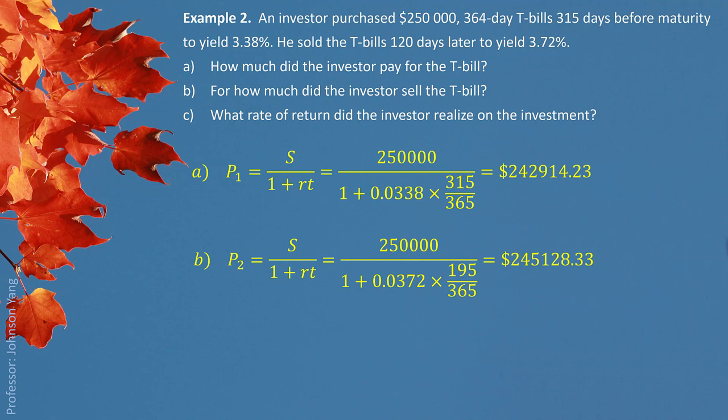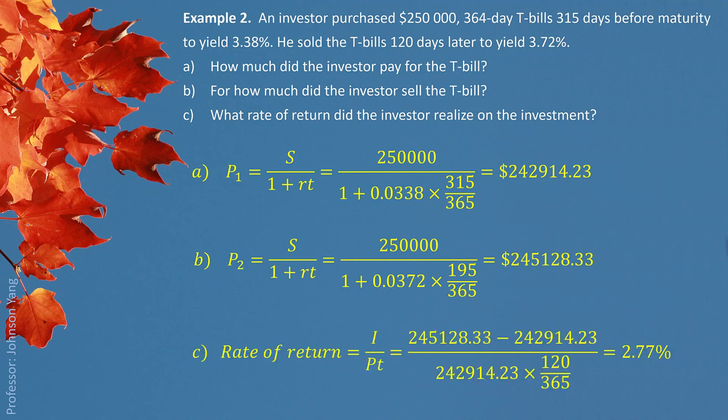The difference between the selling and buying price is the profit, which can also be called interest. The purchasing price P1 can be considered the principal. For Part C — what rate of return did the investor realize? — we divide the interest (the difference) by the principal and then by the time period of 120 days that he held the Treasury Bill. The answer is 2.77%.